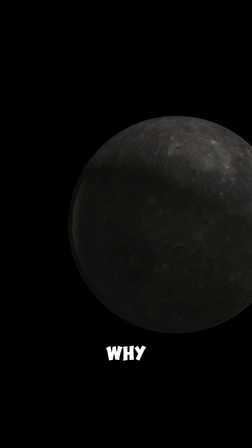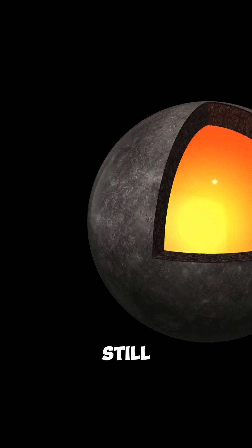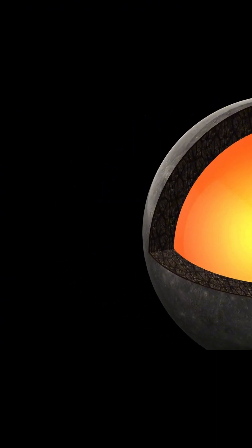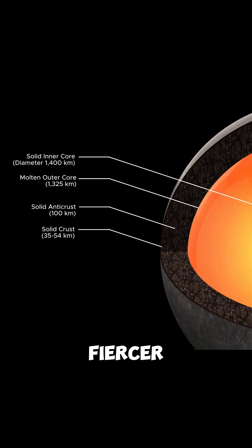But why? How does a planet with a core 85% of its size, bigger than Earth's, still churn molten metal? Is its core still molten, or is this the ghost of a younger, fiercer Mercury?